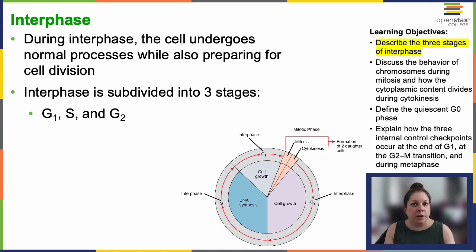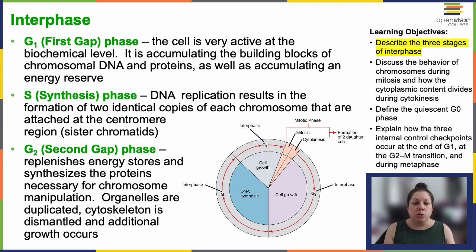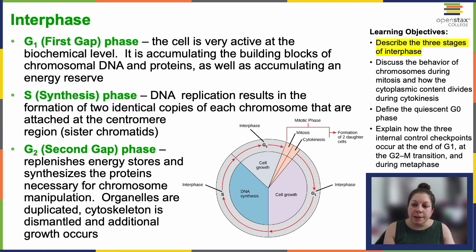Interphase has three stages: G1, S, and G2. In G1, although outward changes are very minimal, the cell is highly active at the biochemical level. It's accumulating all the materials needed for chromosomal DNA replication — all the associated proteins — because we're going to go from particular copies to doubling that. So we need to make a lot of nucleotides, a lot of the proteins that will hold the chromosome in place, along with an energy reserve, because chromosome replication is energy intensive.